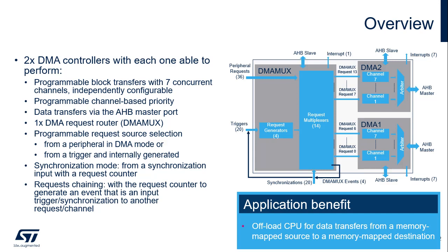The STM32-WL5 DMA features two DMA controllers. For each DMA controller, it is possible to do programmable block transfers with seven concurrent channels, each of which is independently configurable, with programmable channel-based priorities, and data transfers via the AHB master port connected to the bus matrix. There is also a DMA Request Router, or DMA-MUX, with programmable request source selection, either from a peripheral in DMA mode or from a trigger and then internally generated.